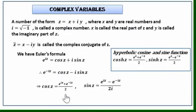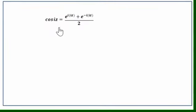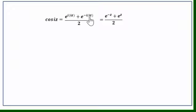From the cosine relation, cos(iz) = (e^(i·iz) + e^(-i·iz)) / 2. Since i·i = i² = -1, this becomes (e^(-z) + e^z) / 2, which is nothing but cosh z. So we have cos(iz) = cosh z.